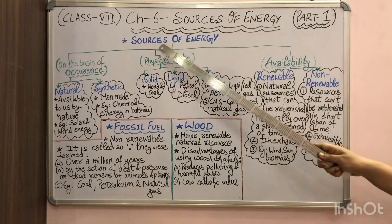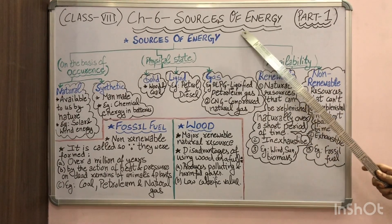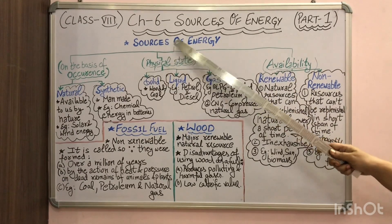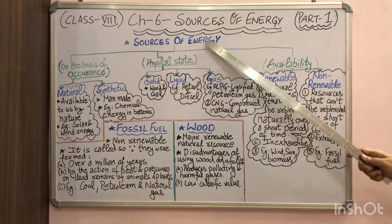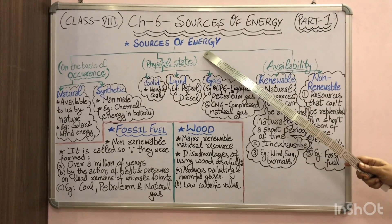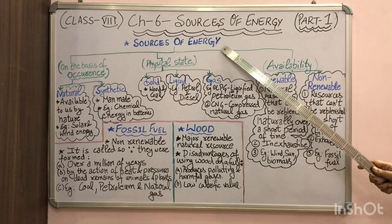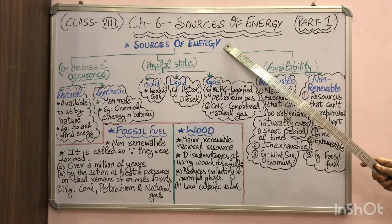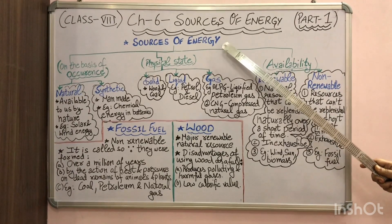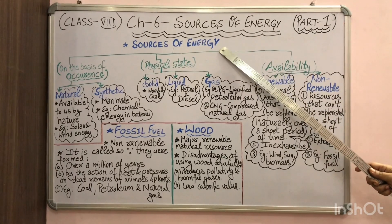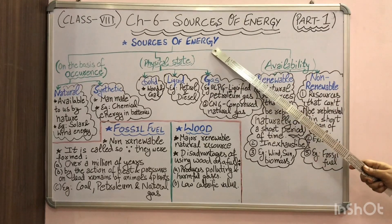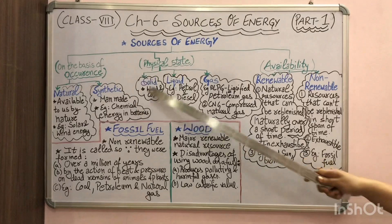All these various forms of energy come from various sources, and there is a need to classify all those sources of energy. We have so many sources in the form of fuels — petrol, diesel, kerosene, coal, wood. So there are numerous sources of energy, and that is why there is a need to categorize them. The sources of energy or fuels can be categorized in many ways.